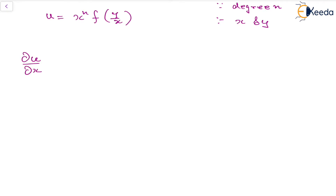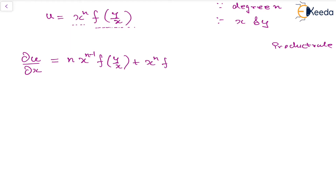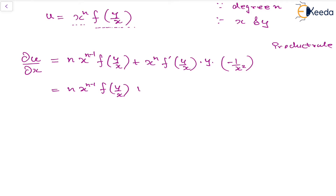The partial derivative ∂u/∂x can be found using the product rule: differentiating the first term x^n gives n·x^(n-1)·f(y/x), plus keeping x^n and differentiating f(y/x) using the chain rule gives f'(y/x) times y times (−1/x²). So this becomes n·x^(n−1)·f(y/x) − x^(n−2)·y·f'(y/x). Let us call this equation (1).